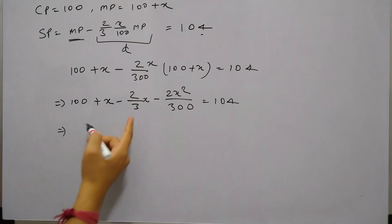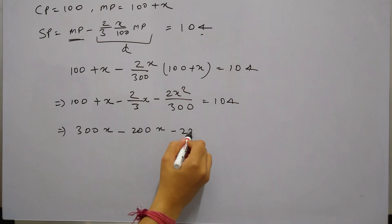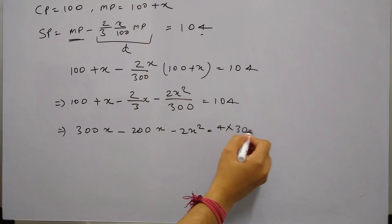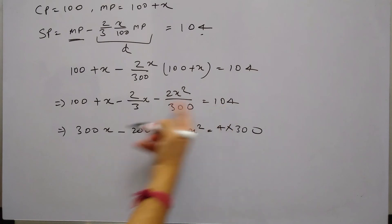So it's 300x minus 200x minus 2x squared equals to 4 into 300. So I have subtracted 100 from this, 100 from this 104, and this 300 of this denominator is multiplied. So it's simply solving the equation.